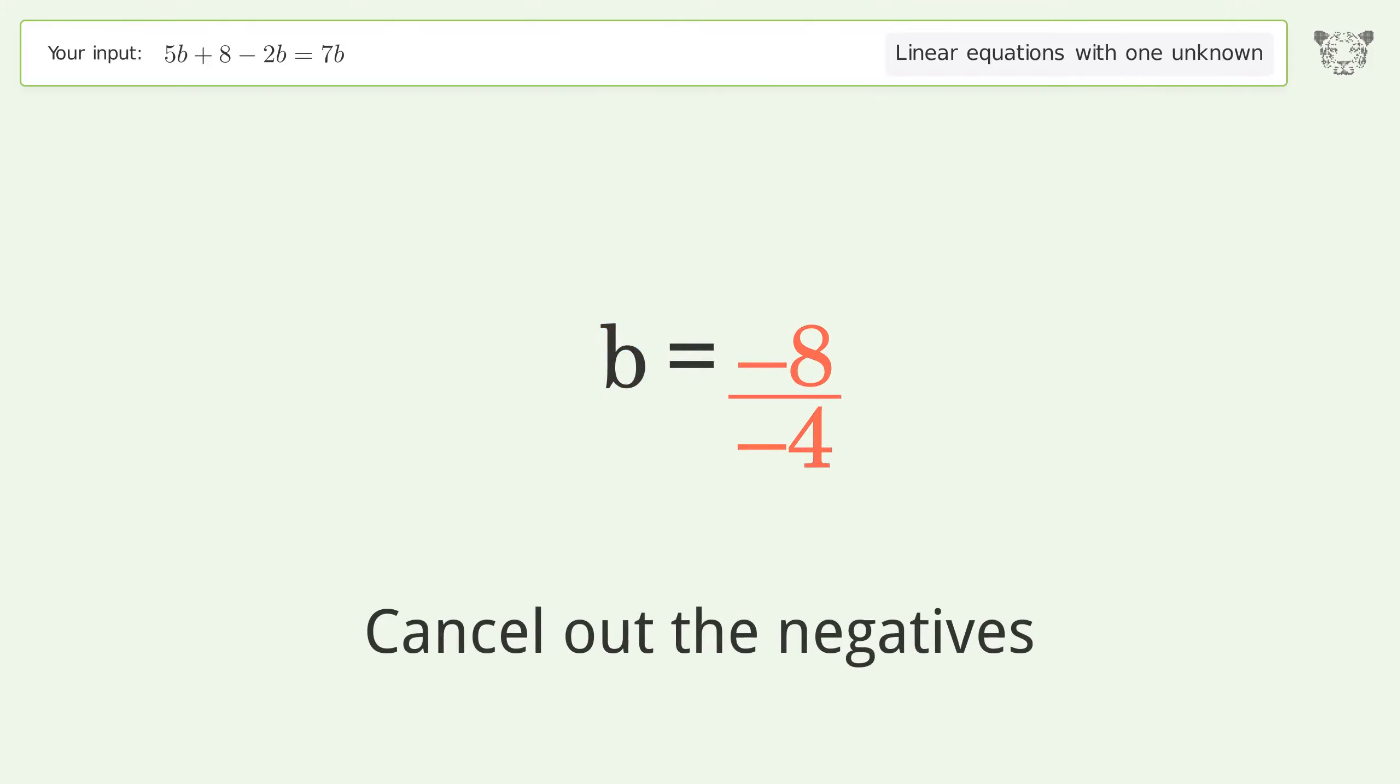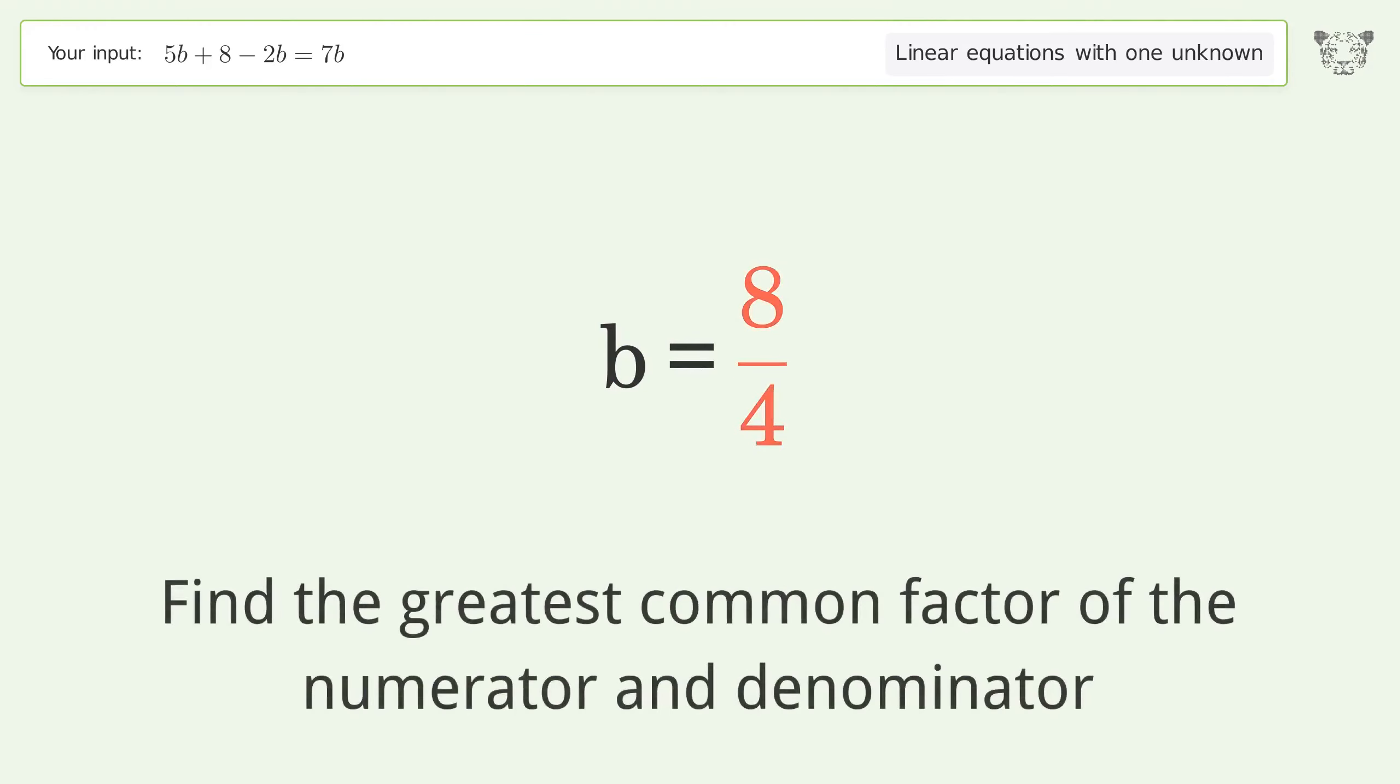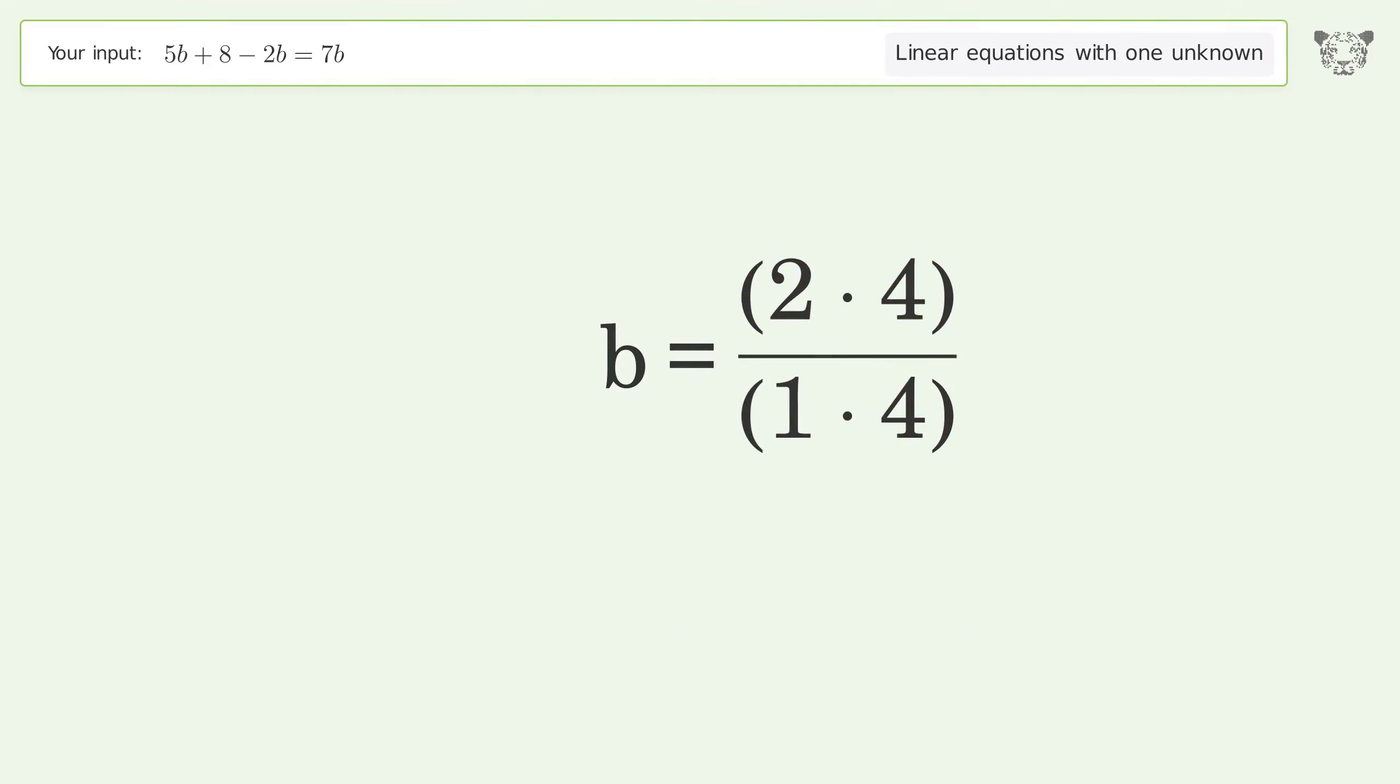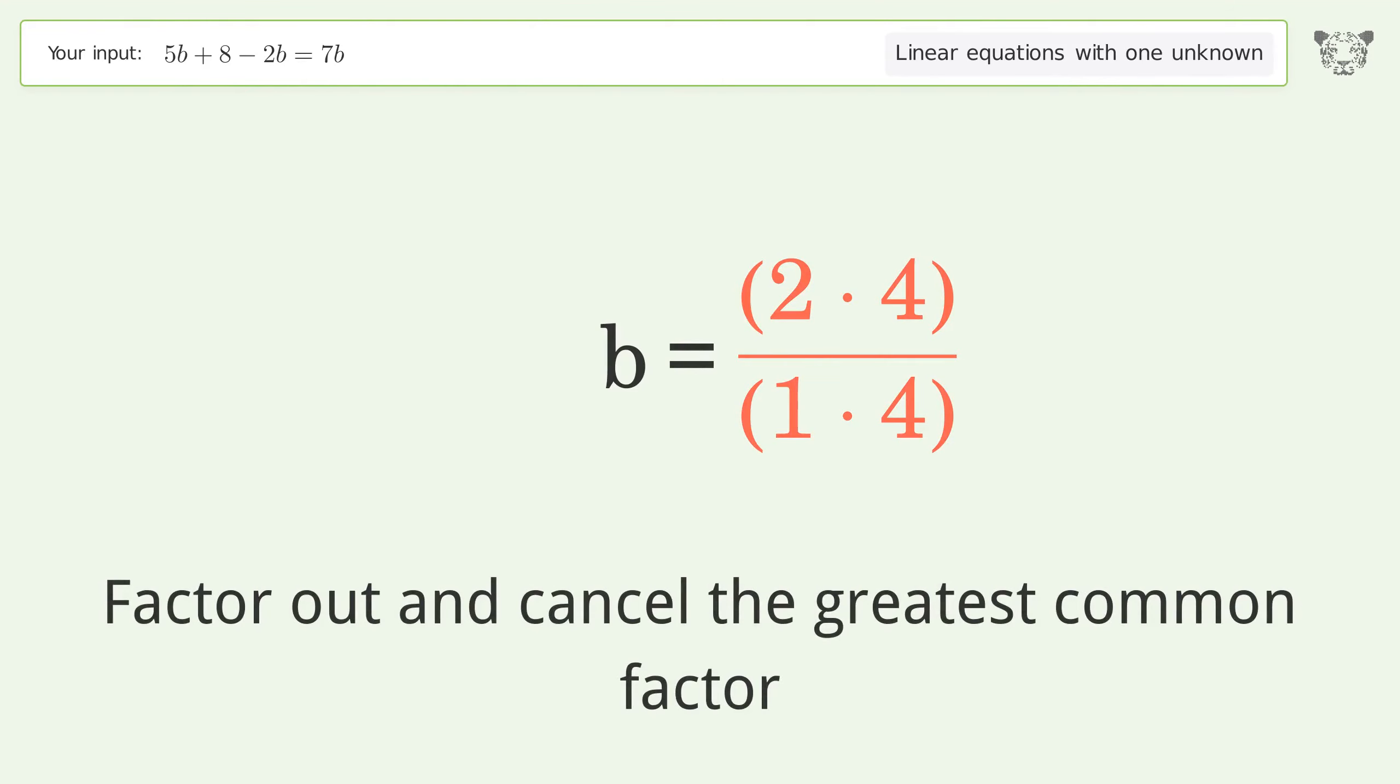Cancel out the negatives. Find the greatest common factor of the numerator and denominator. Factor out and cancel the greatest common factor.